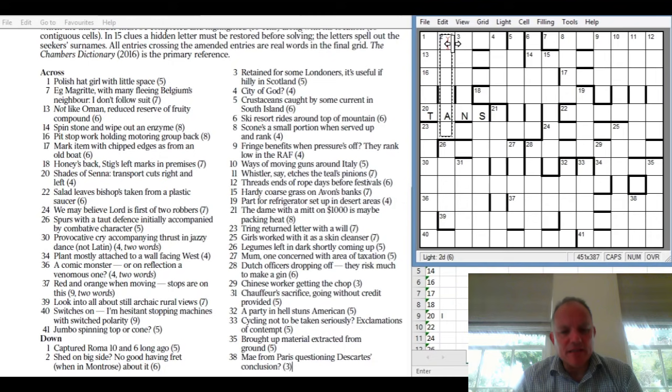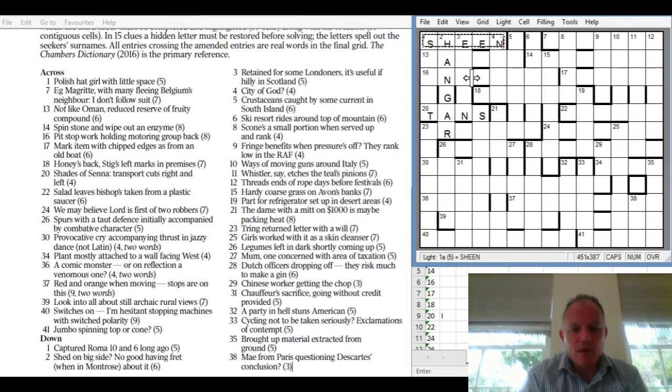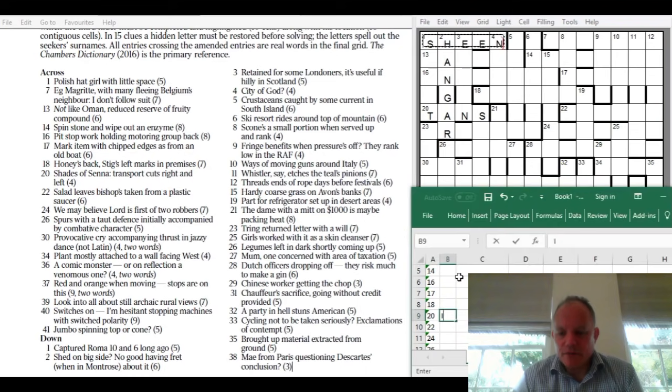HAAR could be in Scottish use, so if you put that around NG you get HANGAR, which is a form of shed. One across again: Polish - shine would fit. Hat girl - SHEEN would fit. Girl could be SHE and N is one of those printer's measures. So we've got T missing in one across.